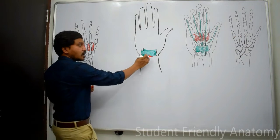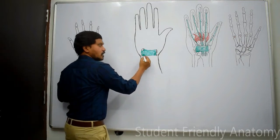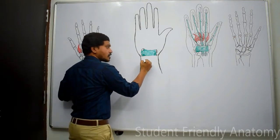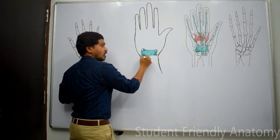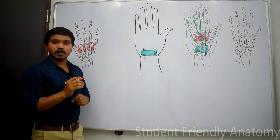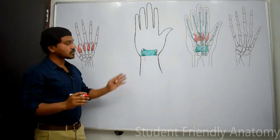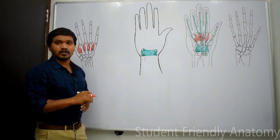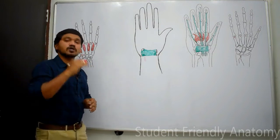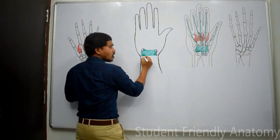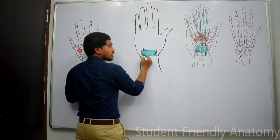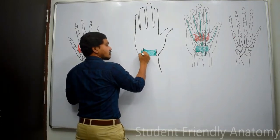As we discussed in the flexor retinaculum session, the ulnar artery passes superficial to the flexor retinaculum. To be very specific, it passes through Guyon's canal, or deep to the volar carpal ligament, and superficial to the flexor retinaculum.